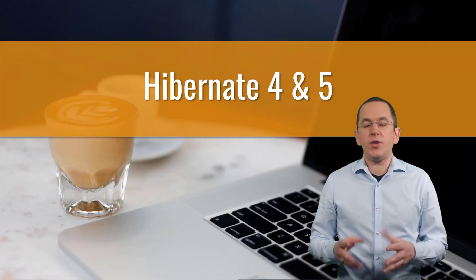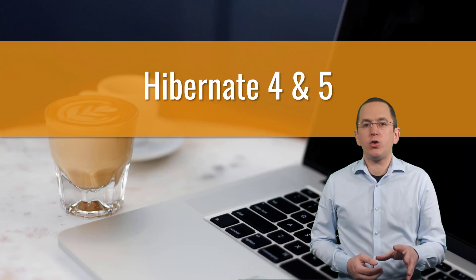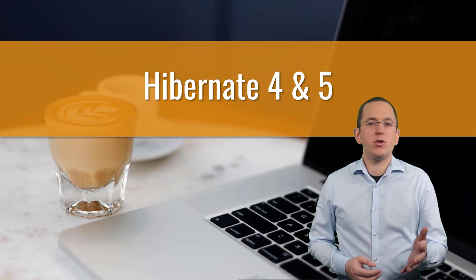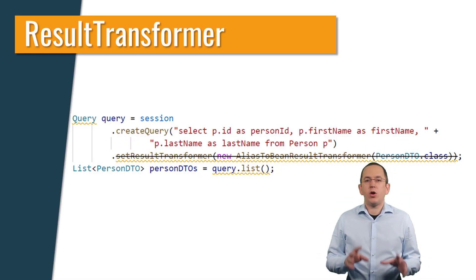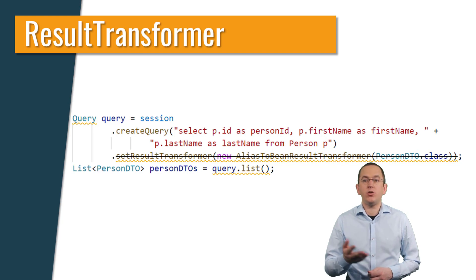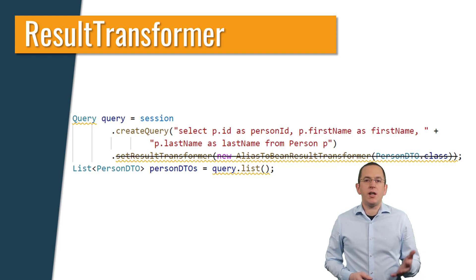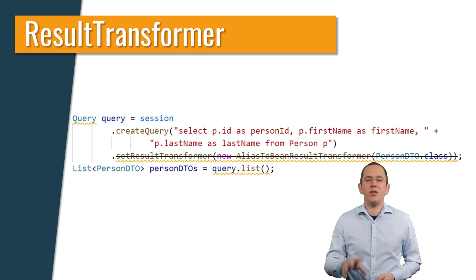Hibernate 4 and 5 include several built-in result transformers. In addition, you can provide your own implementations. To apply them to your query, you only need to provide an instance of your result transformer to the setResultTransformer method of Hibernate's query interface. If you are using JPA's EntityManager and Query interface, you need to unwrap them. Unwrapping the EntityManager gives you the associated Hibernate session; unwrapping JPA's Query interface gives you Hibernate's Query interface. This is explained in more detail in the Hibernate tip "How to access Hibernate APIs from JPA."